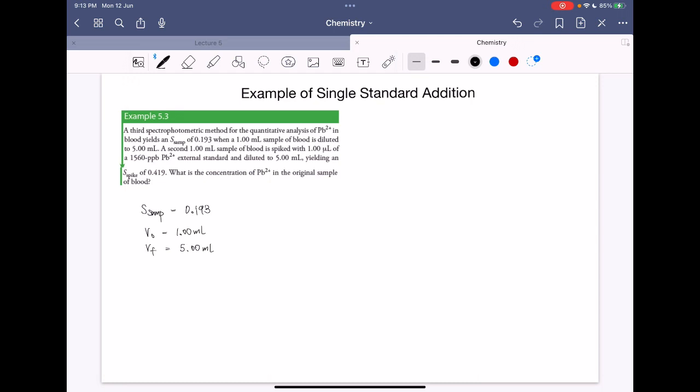A sample of blood is spiked with a one microliter of external standard and diluted to five millimeters, yielding a spike signal of 0.419. So signal of spike is 0.419.